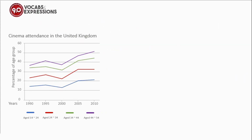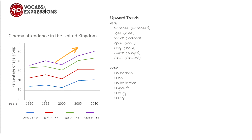For line graphs, we can use appropriate vocabulary and expressions to get a 9.0 mark. For upward trends, we use these verbs: increase/increased, rise/rose, inclined, grow/grew, leap/leapt, surge/surged, and climb. And these are nouns we can use: an increase, a rise, an inclination, a growth, a surge, and a leap.